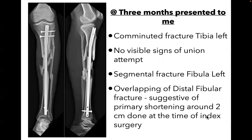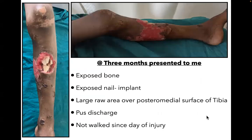This is the radiograph at the time of presentation. One can appreciate a comminuted fracture of the tibia, interlock nail in situ, segmental fracture of fibula, and some overlap at the distal fracture fibula side — meaning the fractured limb was shortened initially at the index surgery. The clinical picture shows exposed bone and implant with a large raw area over the posteromedial surface of the tibia with pus discharge, and this person has not worked since the day of injury.